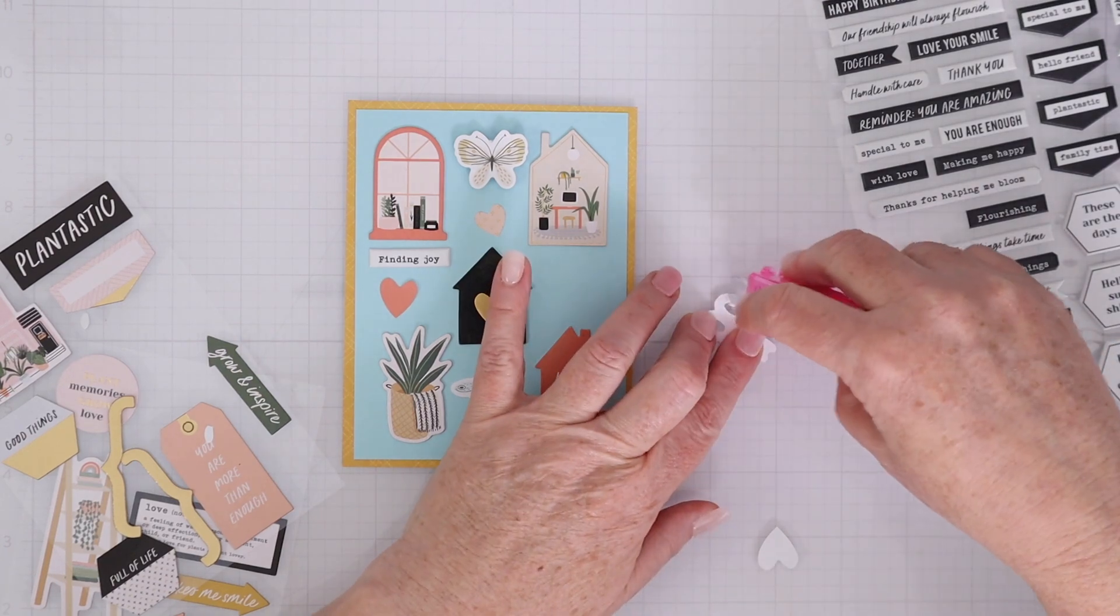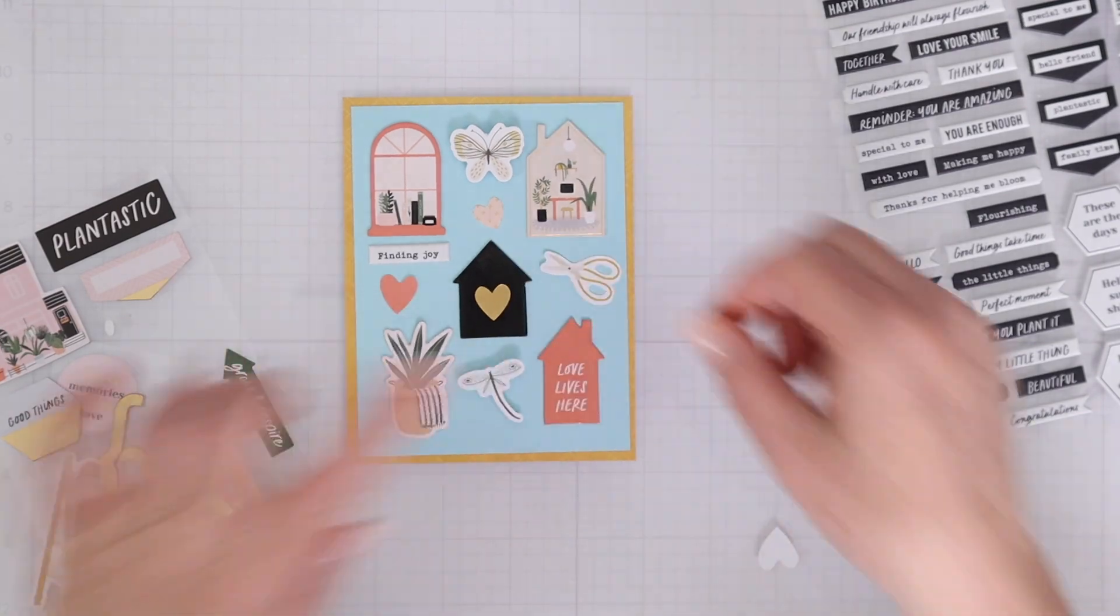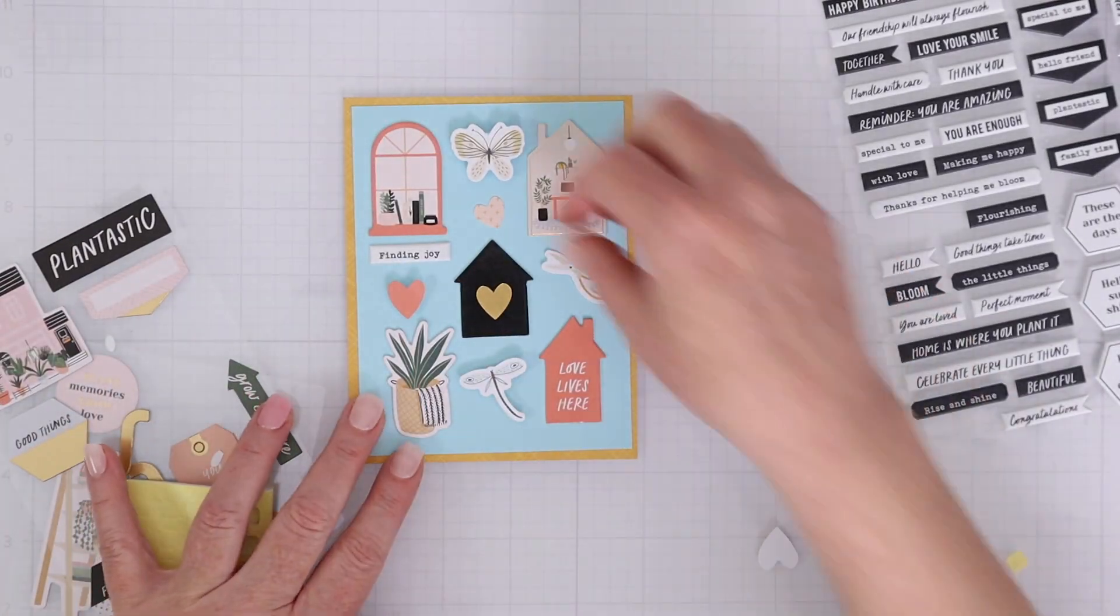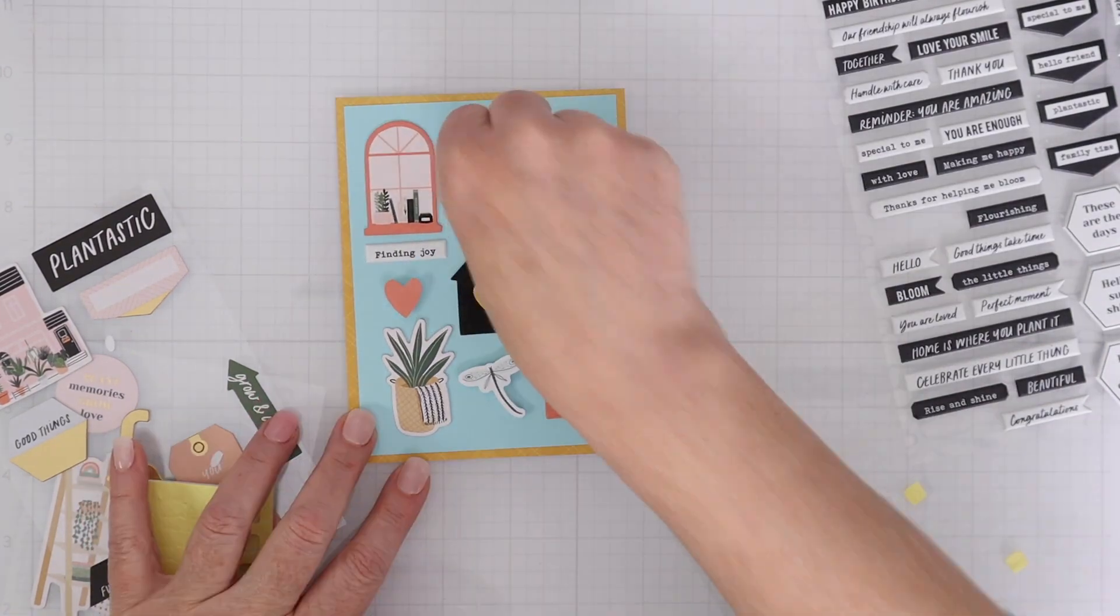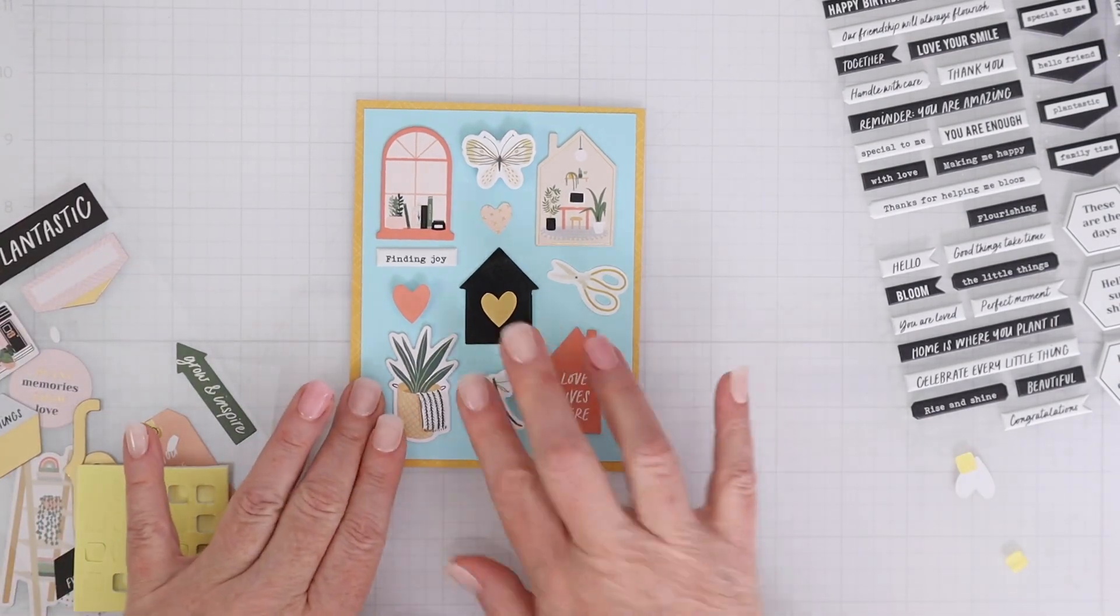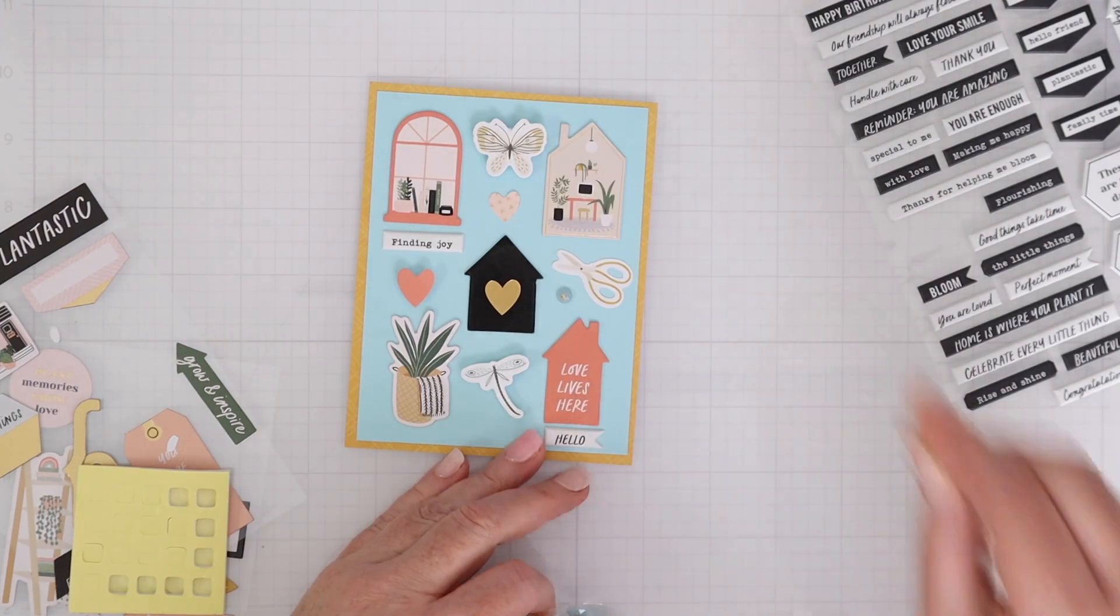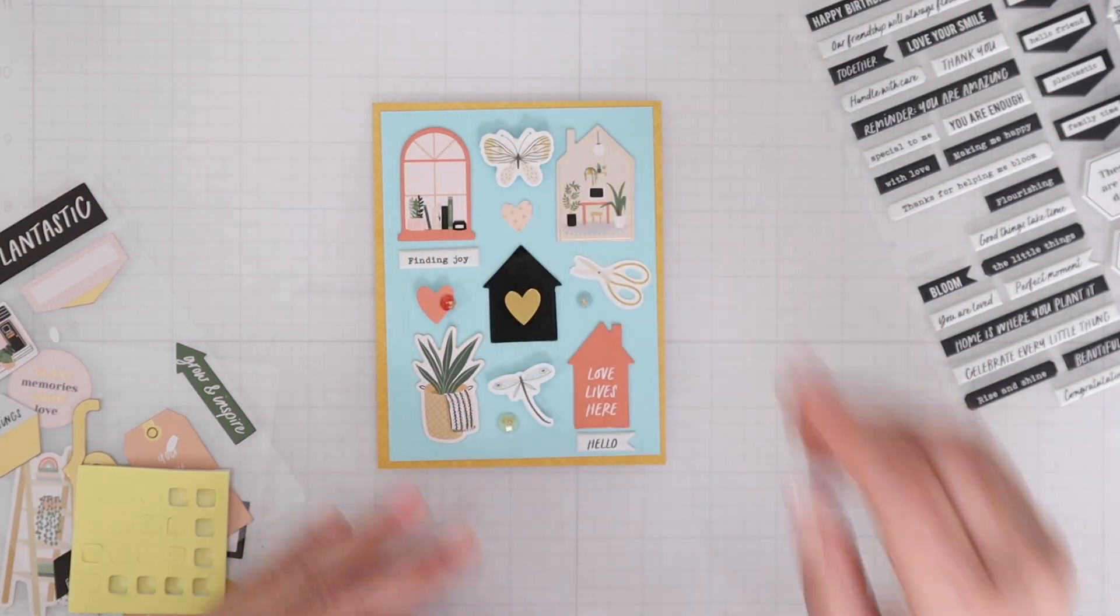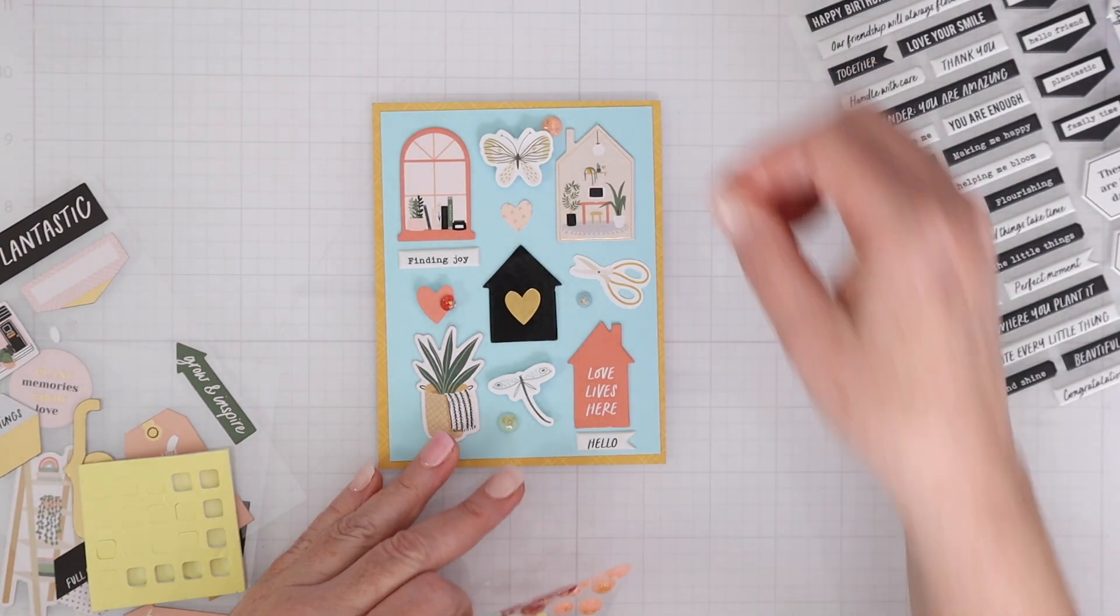Again, this is just a way to use some of those fun designs all on one card. And it's really easy to create. You can recreate this many times with different elements from the kit and just create a whole bunch of cards for your stash to give away. And I have finding joy as one of the sentiments and hello. So this is just an everyday card that you could send at any point to someone just to let them know that you're thinking about them and add a couple of gems for some shine and embellishment too.